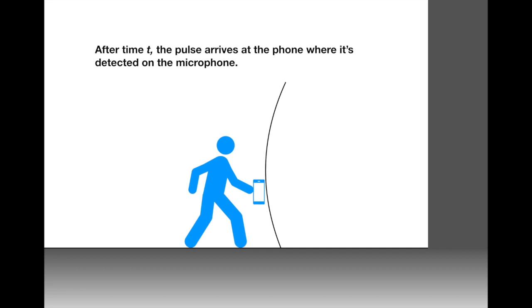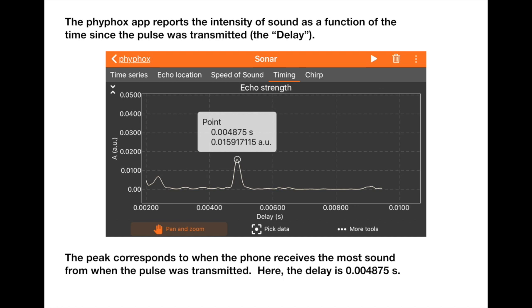It will arrive after some time t. The Phyphox app will produce data that looks like this. This is a graph that shows amplitude in AU. Here AU means arbitrary units. And so this is the amplitude of the sound wave that's received and it's plotted as a function of delay time or delay here in seconds.